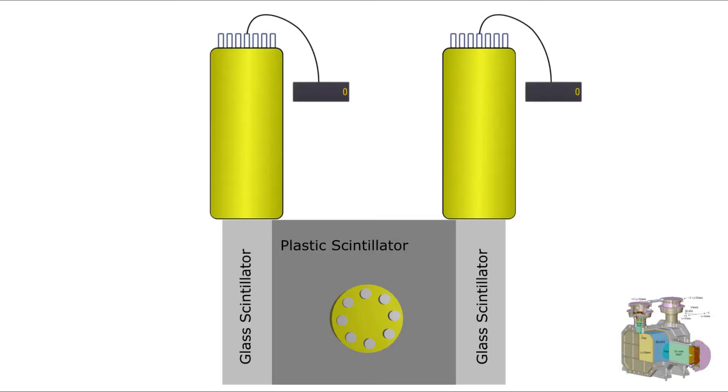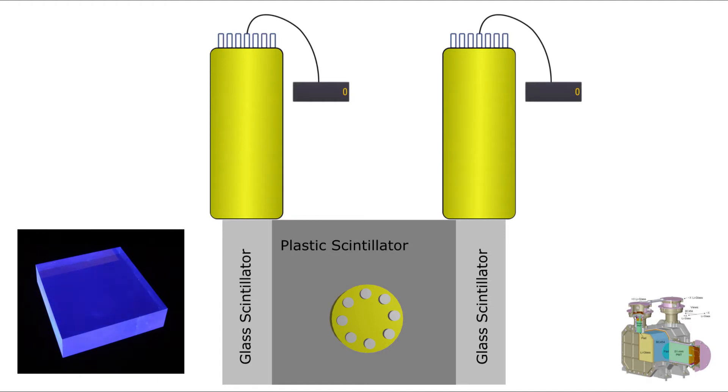The scintillator is a special piece of glass or plastic that uses energy from ionizing radiation to create photons, basically flashes of light. The ionizing radiation in our case is free neutrons.